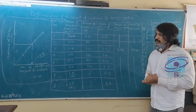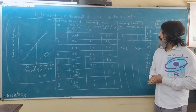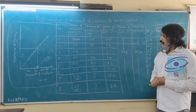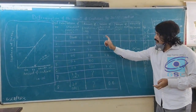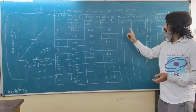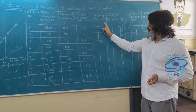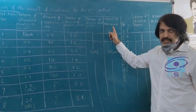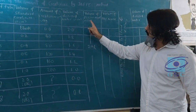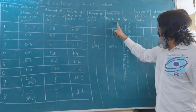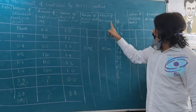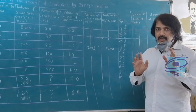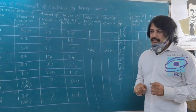Let us discuss the principle involved in this procedure. This is estimated by Jaffe's method. Creatinine reacts with picric acid — that is 2,4,6-trinitrophenol — in the presence of an alkaline medium. NaOH provides the alkaline medium. Creatinine reacts with picric acid in alkaline medium, and an orange-colored product is formed. By measuring the intensity of the orange color, we can find out the amount of creatinine in the given sample.